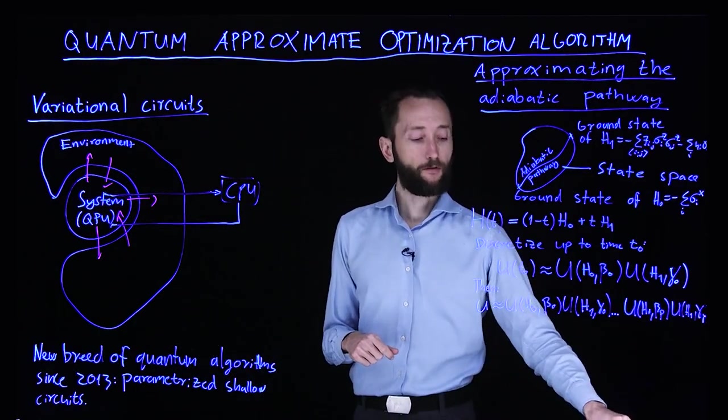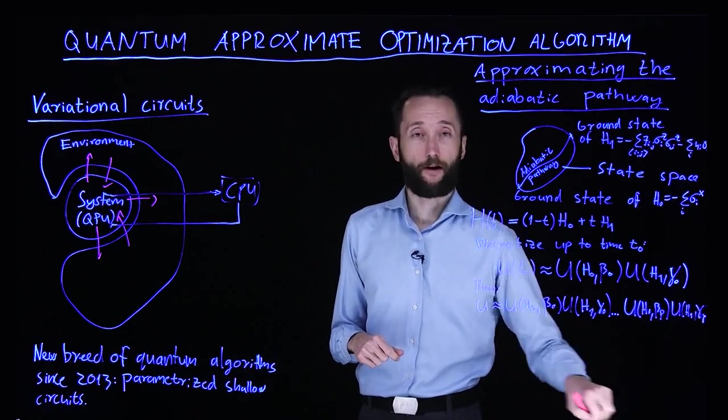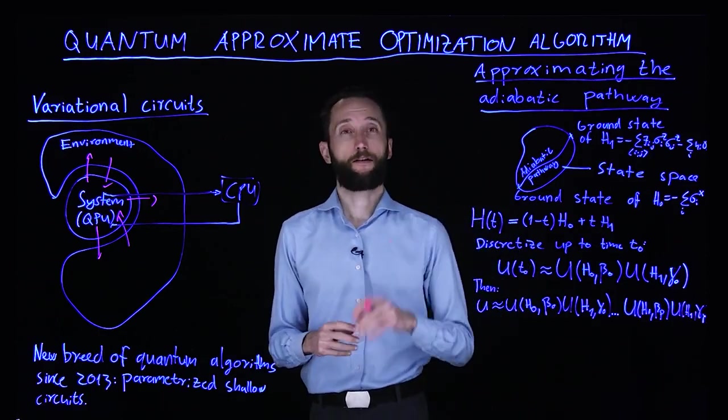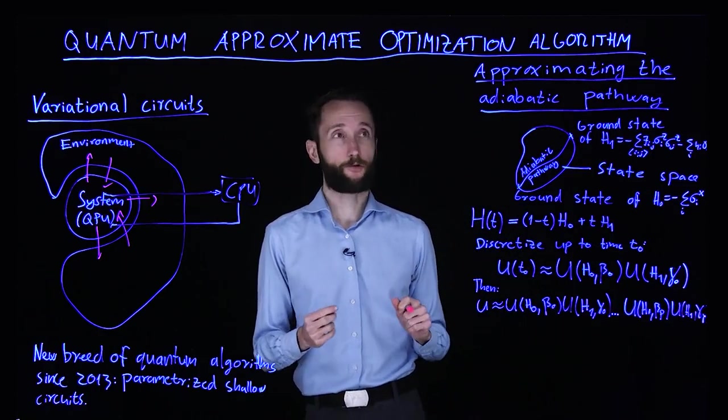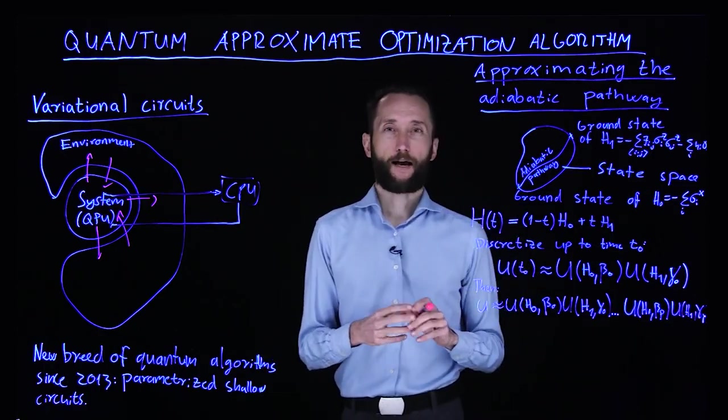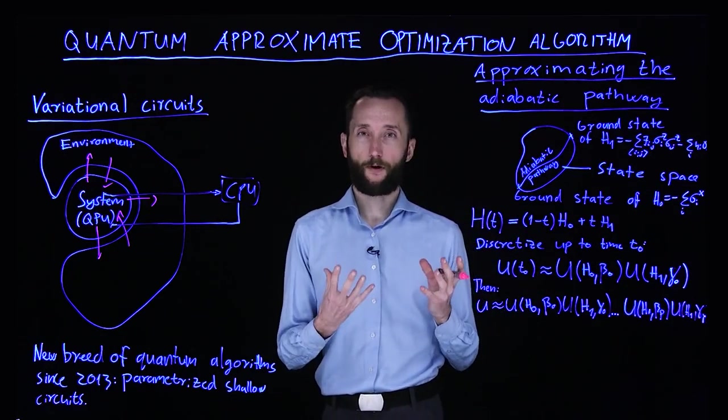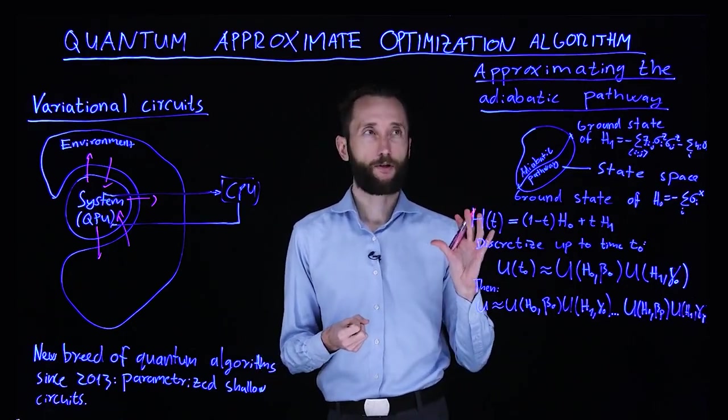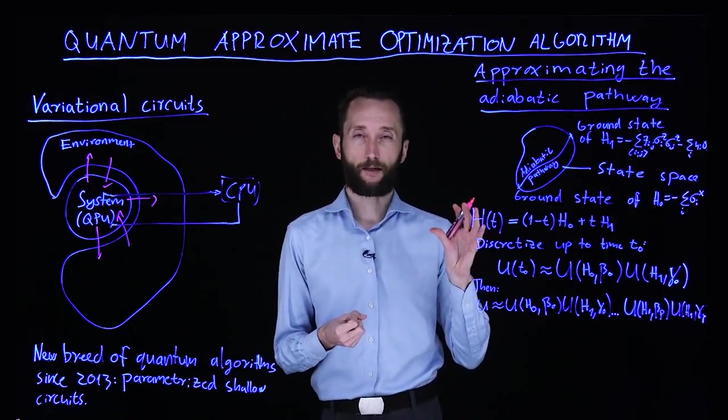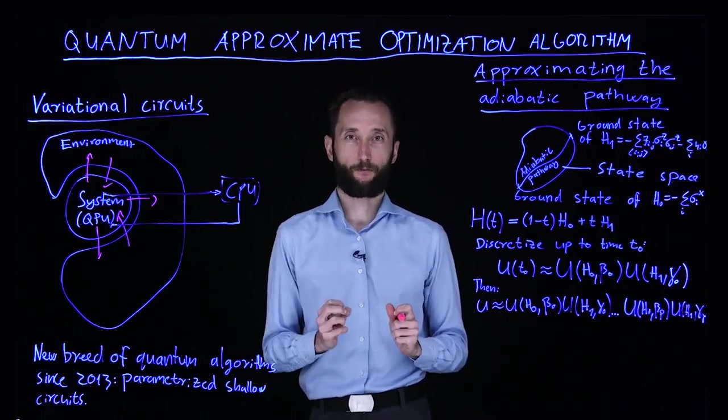One of the most famous variational circuits is quantum approximate optimization, or QAOA for short, which draws inspiration from quantum annealing. What we're trying to do is approximate the adiabatic pathway, but on the gate model quantum computer.